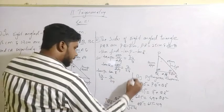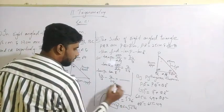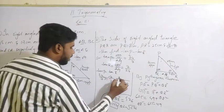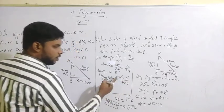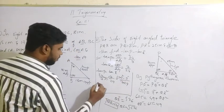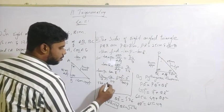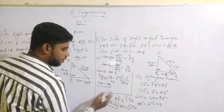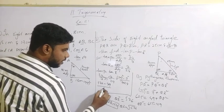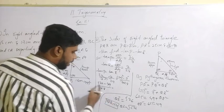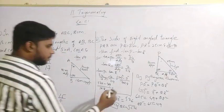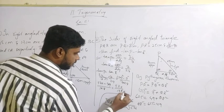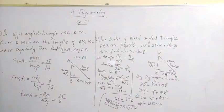To subtract these fractions we take the LCM, which is 7 times 24. Cross multiplying gives us 24 squared minus 7 squared in the numerator. So we get 576 minus 49 divided by 168. That gives us 527 divided by 168.